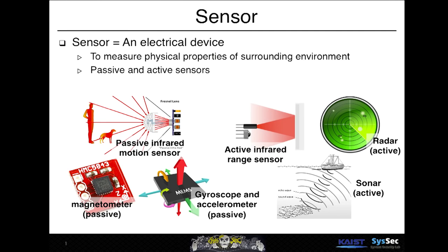A sensor is an electrical device to measure physical properties of the surrounding environment. Sensors are divided into passive sensors and active sensors. Passive sensors measure the environment in itself. Passive infrared sensors, magnetometers, gyroscopes, and accelerometers are good examples of passive sensors.